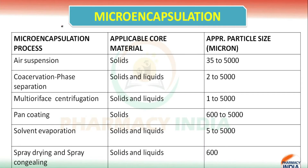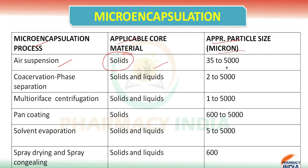In this video we are going to discuss the microencapsulation process, the applicable core material, and the approximate particle size in microns. The first process is air suspension and it is only applicable for solid. The particle size is equal to 5000 micron. The second one is co-acervation phase separation, applicable for solid and liquid, and the particle size is 2 to 5000 micron.